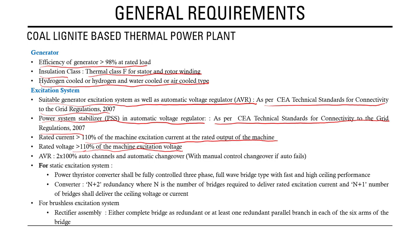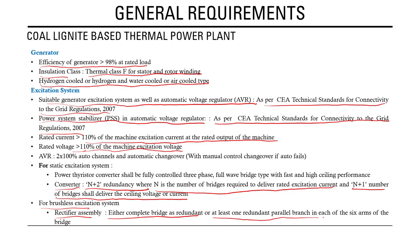For static excitation systems, N+2 redundancy is required for the converters, where N is the number of bridges required to deliver rated excitation current, and N+1 bridges must deliver the ceiling voltage or current. For brushless excitation systems, a redundant rectifier assembly — either complete bridge redundancy or at least one redundant parallel branch in each of the six bases — is required.